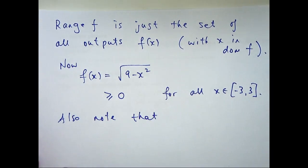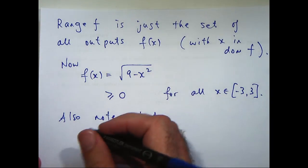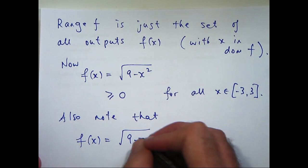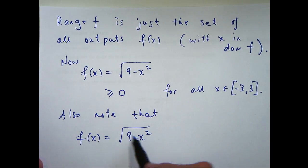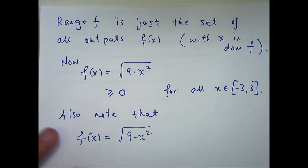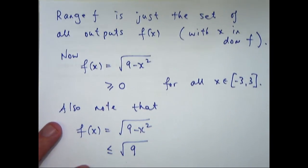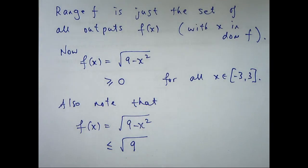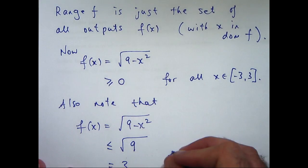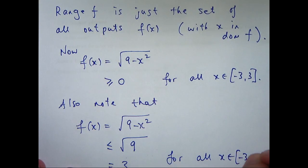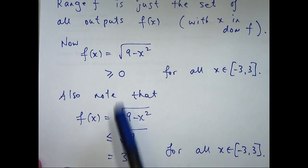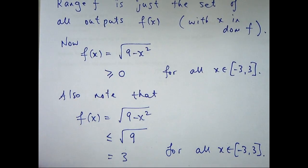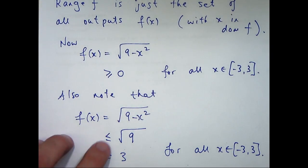Also, note that, well, is there another inequality that I can use here? Well, here I've got the square root of 9 minus x squared. Now, x squared is always non-negative. So we're taking the square root of 9 minus some non-negative number. So, in fact, I can form the following inequality. This is just 3 here. Okay, so combining this inequality and this inequality, we see that the output has to be greater than or equal to 0 but less than or equal to 3.